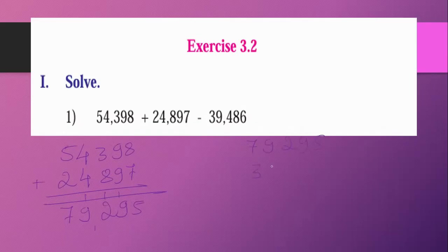Subtract from 90,486. 79,295 minus. 5 minus 6 is not possible, borrow 10 from nearby house, it becomes 15. 15 minus 6 is 9, carry 1. 9 minus 1 is 8, minus 9 is 0. 12 minus 4 is 8, carry 1. 9 minus 1 is 8, 19 minus 10 is 9, carry 1. 7 minus 4 is 3. The answer is 39,809.